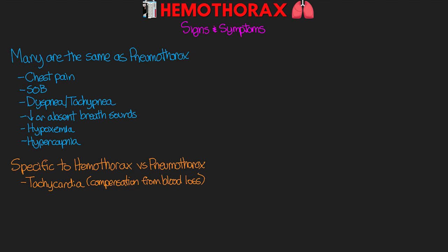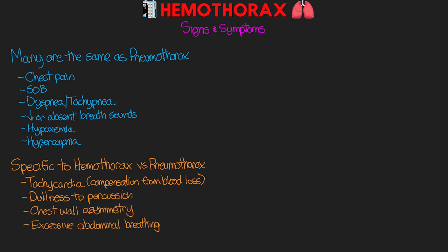For these patients we're also going to have a dullness to percussion, because we're filling up with fluid. We can also see chest wall asymmetry or excessive abdominal breathing, which could be the result of a flail chest injury. In cases of tension hemothorax, the signs and symptoms are going to be similar to tension pneumothorax, as they're the result of that cardiopulmonary compromise.